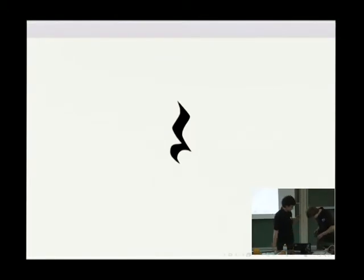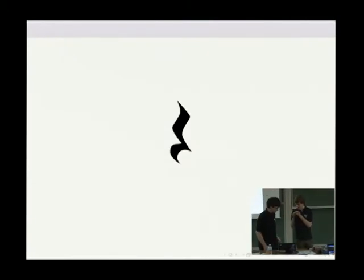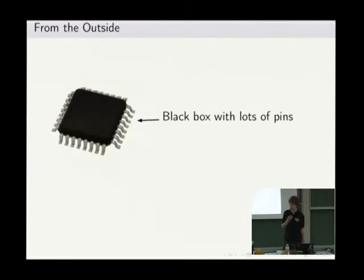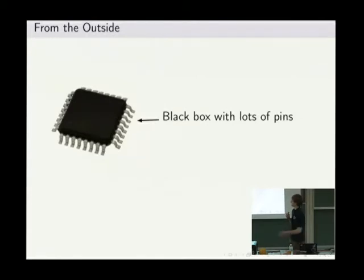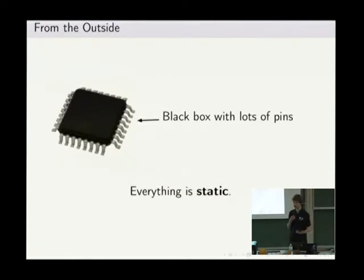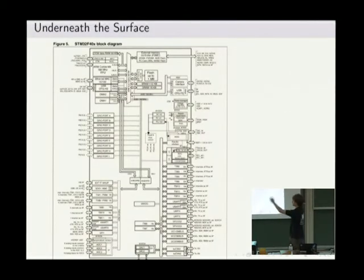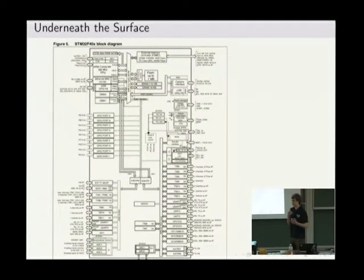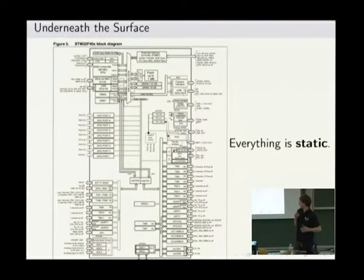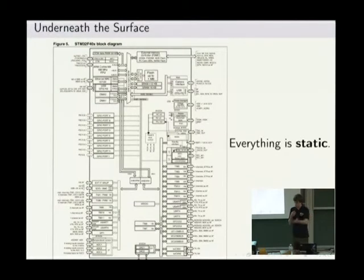Now Kevin will talk about the build system. Going back to the black box: as an electrical engineer, I observe that all those pins don't change once the chip is produced — I call that static. And if you look under the surface at a block diagram of an STM32F4, you can see all those different peripherals connected to a bus — they don't change during runtime. We want to model this in software, and what comes to mind in C++ is using static classes — classes that only have static methods and static members.